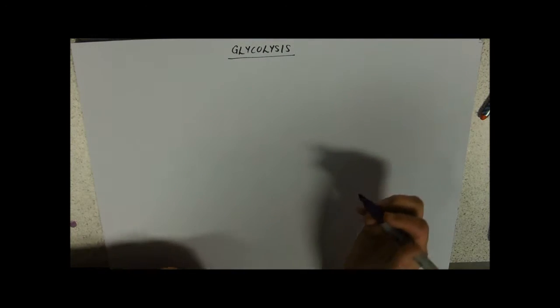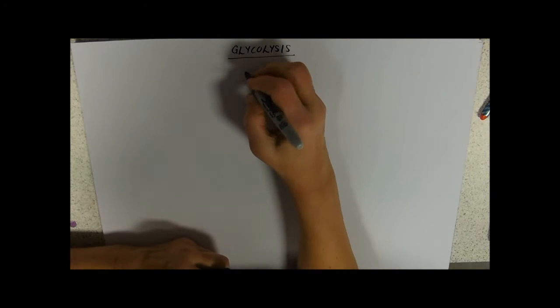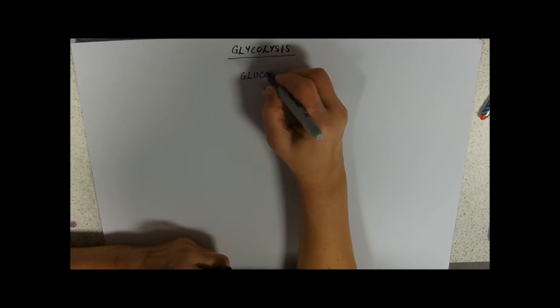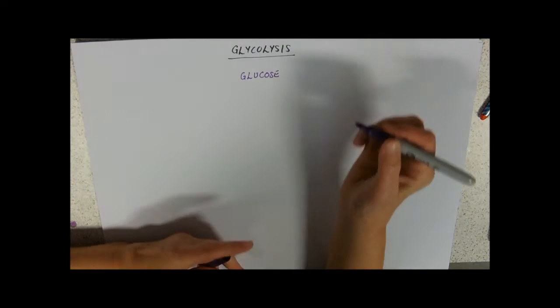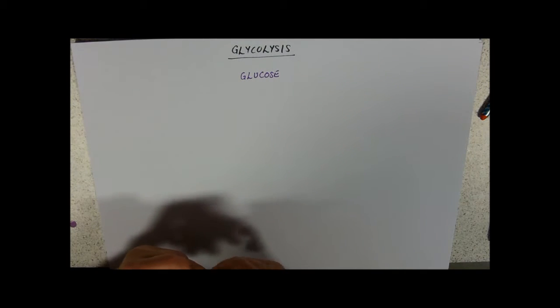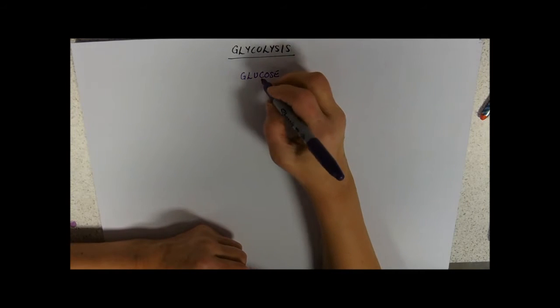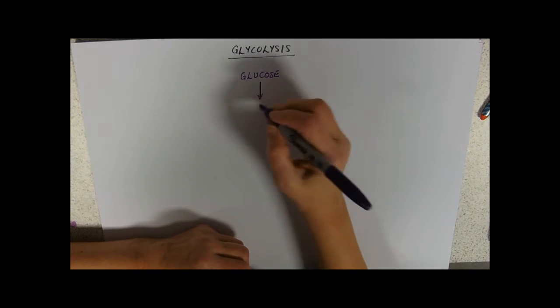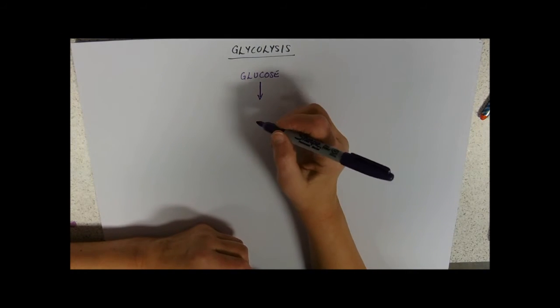So glycolysis, as it says on the tin, starts off with glucose. So this is where the glucose is getting into respiration. This is where we're using it up. And the first thing that happens to glucose is that it's kind of energized or activated by having ATP added to it.